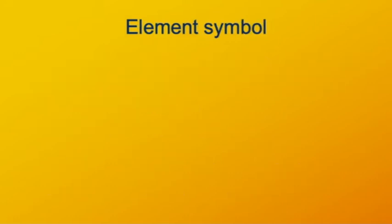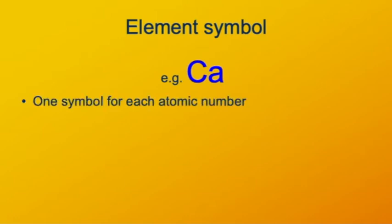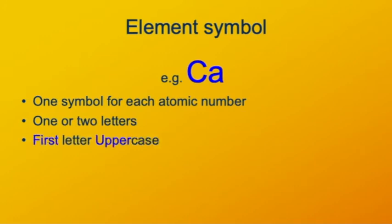Anything we use a lot, we want to be able to represent concisely. So each element name has a compact symbol to represent it. Every symbol consists of one or two letters. The first letter is capitalized, and the second, if there is a second, is lowercase.